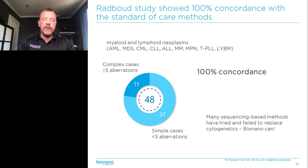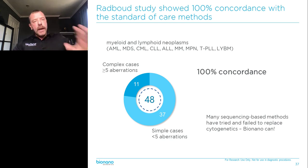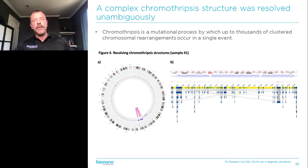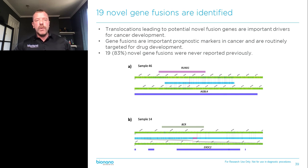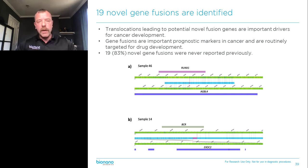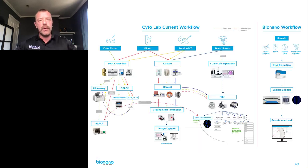That is just incredible. Many sequencing-based methods have tried to do this and failed to replace cytogenetics. We are the first technology that can actually do that. Besides the more standard variants like a BCR-ABL translocation, they had a sample with complex chromothripsis that was resolved unambiguously by BioNano. And on top of that, they discovered 19 novel gene fusions never before reported — some with a translocation partner known to be important, like BCR, but with a new translocation partner that had not been reported before. An enormous amount of discovery potential in this type of data.